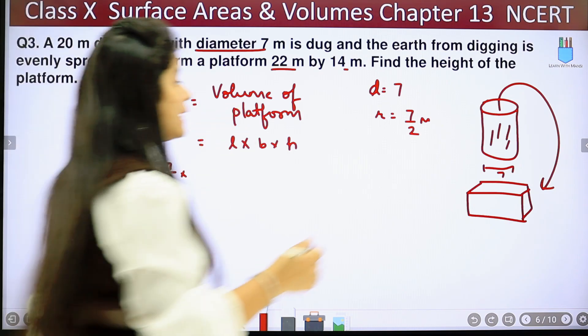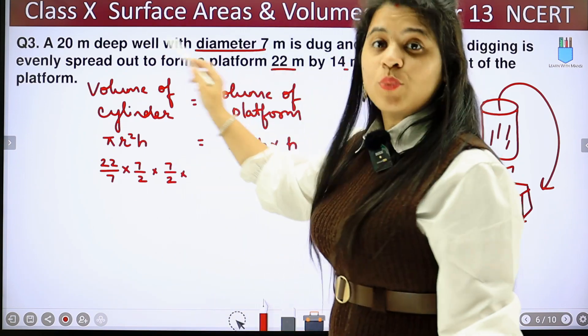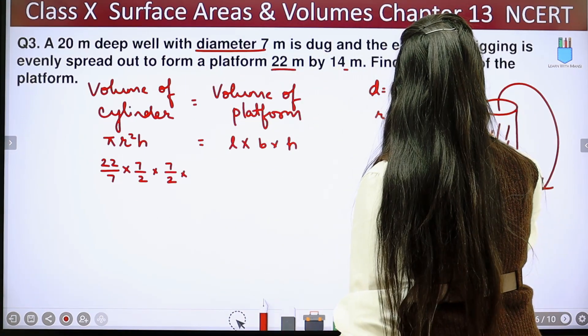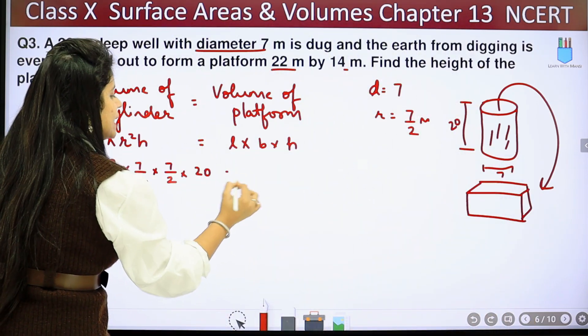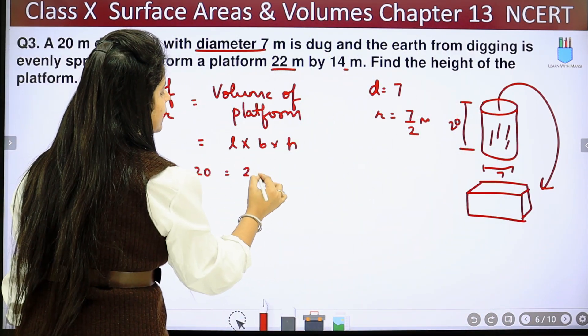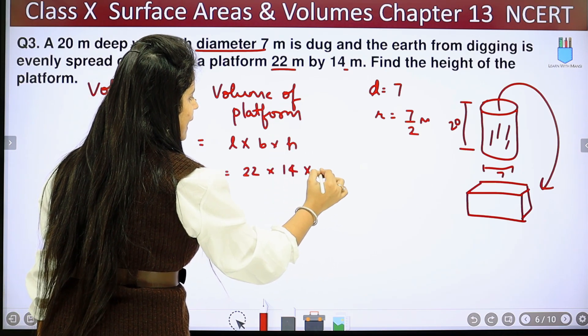Now if we talk about cylinder height, then the question is given that it is 20 meters deep. So how much depth is it? It is 20 meters. So its height will be 20. So into 20 equals to length and breadth. How much? 22 into 14 into h.